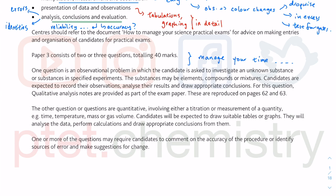There will definitely be an observational problem — this is to do with qualitative analysis. Qualitative means it's not to do with numbers but with the general idea of observation. You're trying to analyse the presence of ions, but it's not just that, because the substances may be elements, compounds, or mixtures — you could have a mixture of compounds where you have more than one ion, or pure compounds including organic compounds.